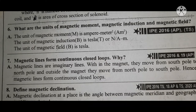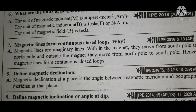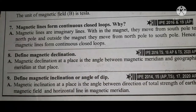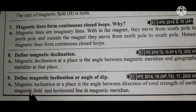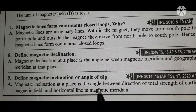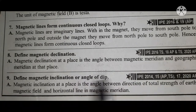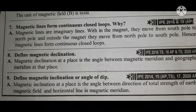Question eight: Define magnetic declination. Magnetic declination at a place is the angle between the magnetic meridian and the geographic meridian at that place. Question nine: Define magnetic inclination or angle of dip. Magnetic inclination at a place is the angle between the direction of the total strength of Earth's magnetic field and the horizontal line in the magnetic meridian.